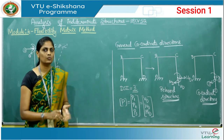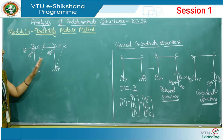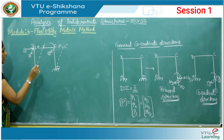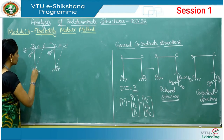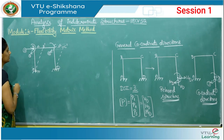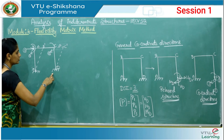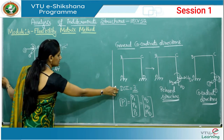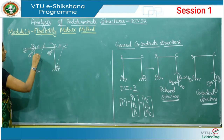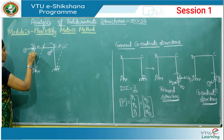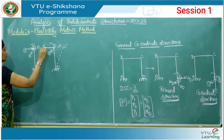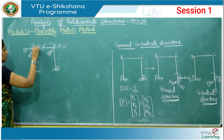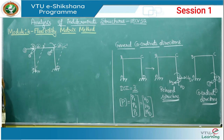Consider a second portal frame where instead of assuming redundants at joint D, I assume redundants at joints B and C. The degree of static indeterminacy is the same since both are portal frames with fixed ends. I assume three redundants: one rotation at joint B, one rotation at joint C, and one axial sway force. Because of that axial force we get a sway delta.